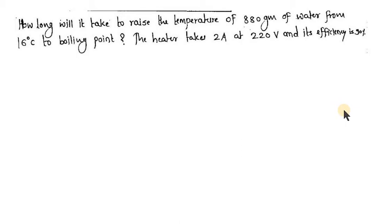First, understand the numerical as if it is a real life experiment. A heater is being used, which takes 2 ampere when connected across 220 volt and operates at an efficiency of 90 percent. This heater will be used to raise the temperature of 880 grams of water from 16 degree Celsius to boiling point.